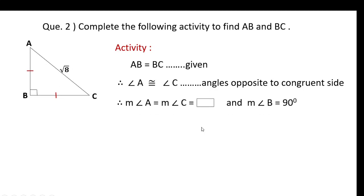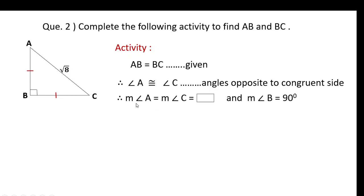Therefore, since AB equals BC, angle A is congruent to angle C by the converse of the isosceles triangle theorem — the angle opposite congruent sides is congruent. Therefore angle A is congruent to angle C. The measure of angle A equals the measure of angle C. Angle B is 90 degrees, so the two remaining angles share the remaining 90 degrees.